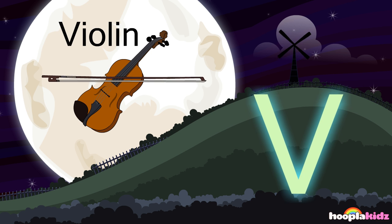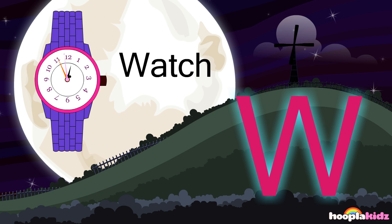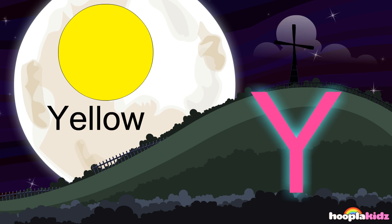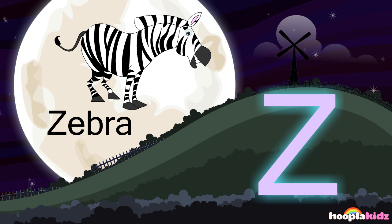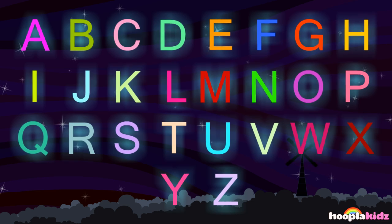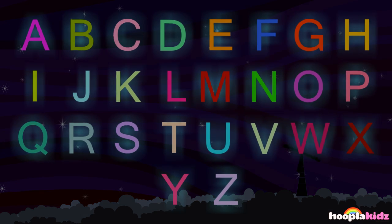U for umbrella, V for violin, W for watch, X for xylophone, Y for yellow, Z for zebra. This is the alphabet song, now it's your turn to sing along.